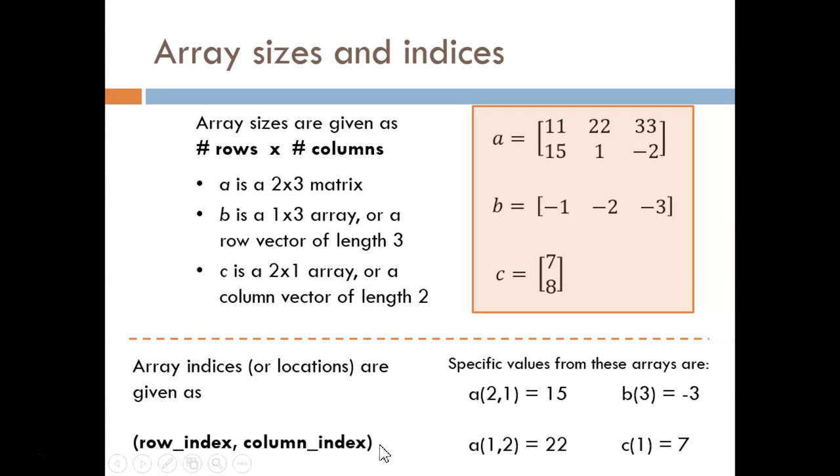This is why parentheses are not allowed in a variable name. If working with a 2D matrix, the first index identifies the row, and the second index identifies the column. Let's look at these examples on the right.